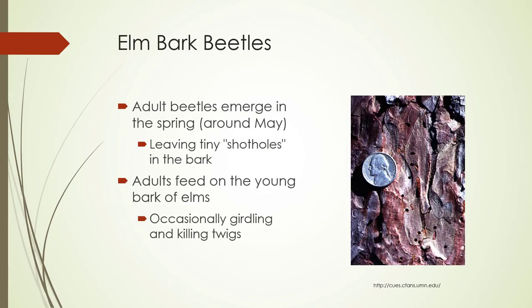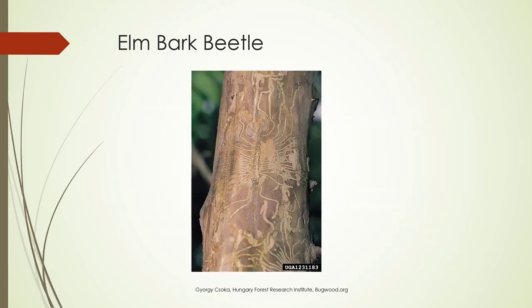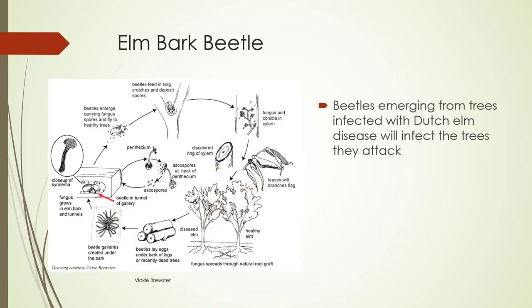The adult beetles emerge in spring around May, leaving tiny shot holes in the bark. The adults feed on the young bark of elms, occasionally girdling and killing the twigs. After feeding, the adults tunnel into the inner bark of weakened or recently dead elm trees, laying their eggs in galleries parallel with the grain of the wood. The larvae hatch and feed in the layer under the bark. The life cycle may be completed in 35 to 40 days.